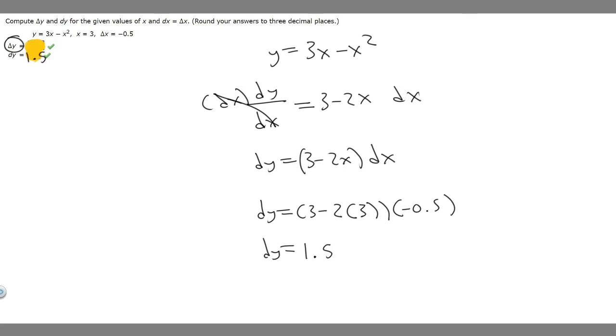So now let's find delta y. In order to find delta y, you're going to use this formula. So delta y equals f of x plus delta x, then you're going to subtract f of x.